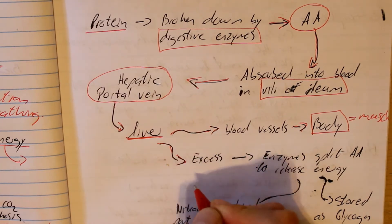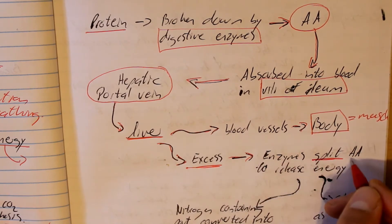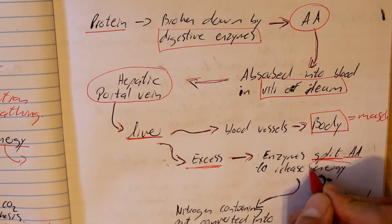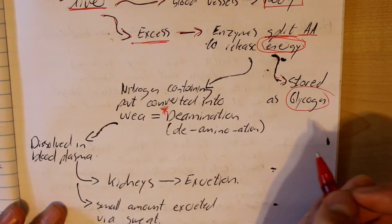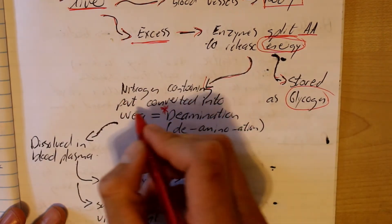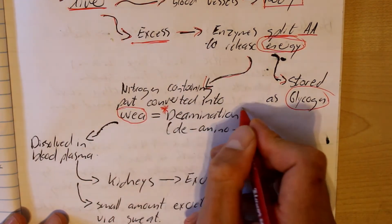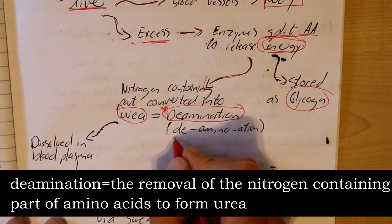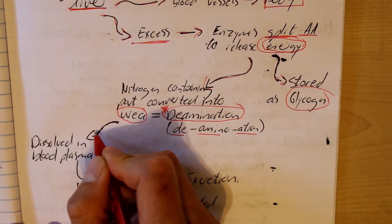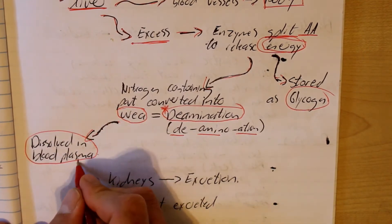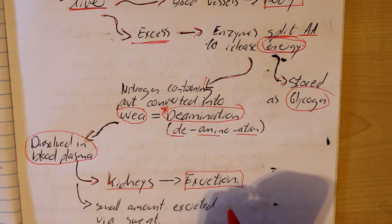The excess amino acids, however, are broken down by enzymes. These enzymes split our amino acids to release energy. The energy is stored in the body as glycogen for later use. What remains is a nitrogen-containing part, which is then converted to urea through the process of deamination. You can break the name down — deamination — to remember it. Urea is then dissolved in blood plasma and excreted. It goes to the kidneys, and the kidneys excrete the urea in urine.